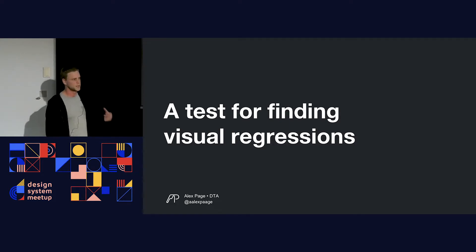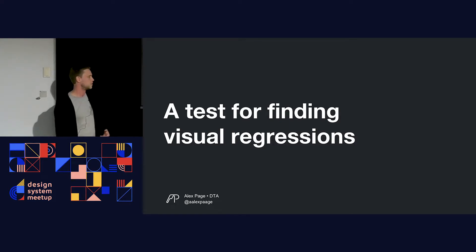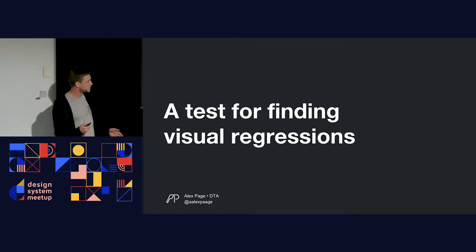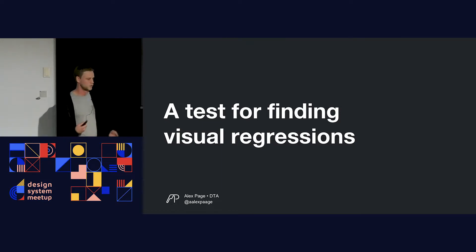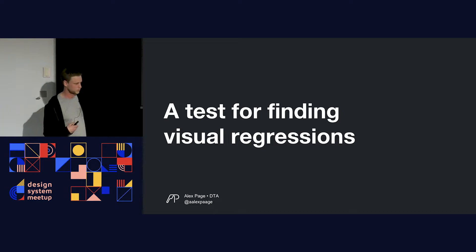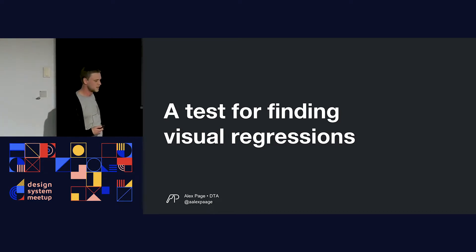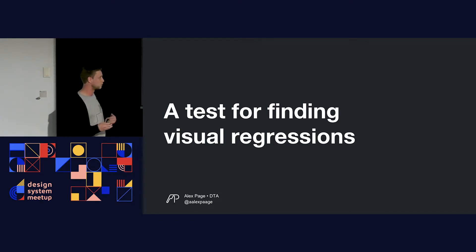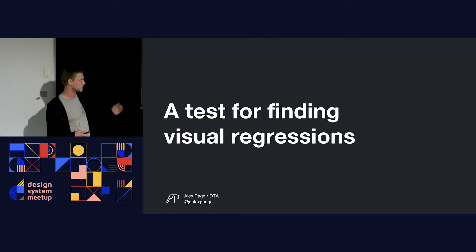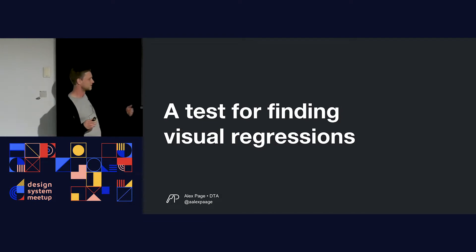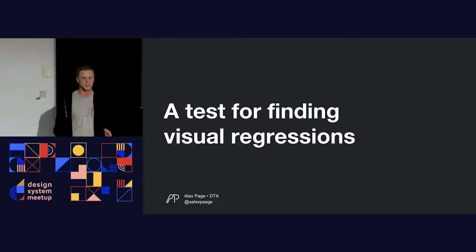Then we get into more complicated things. We may have a test for finding visual regressions — simply, it could just be called a visual regression test. But what happens when it's no longer just that — when it's an open source product shared with other government agencies, runs multiple times from a URL inputted on the command line, and has documentation and logging? It's a bit more complicated than a visual regression test now, so you may want to name it something different.